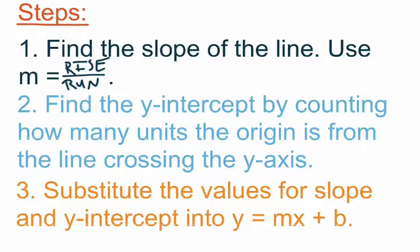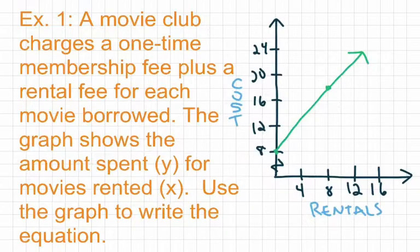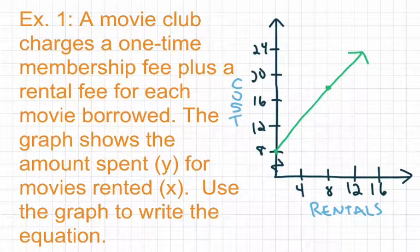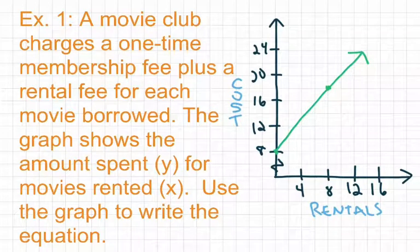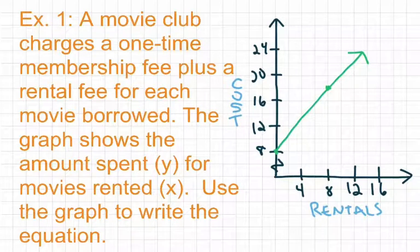Let's take a look at a couple of examples. For our first example, a movie club charges a one-time membership fee plus a rental fee for each movie borrowed. The graph shows the amount spent, y, for movies rented, x. Use the graph to write the equation.